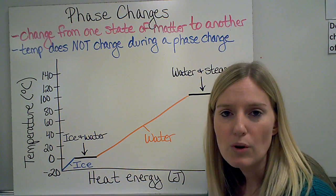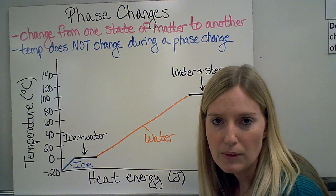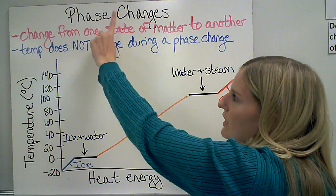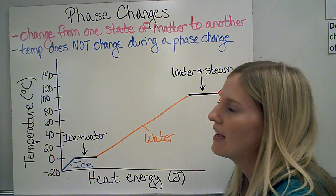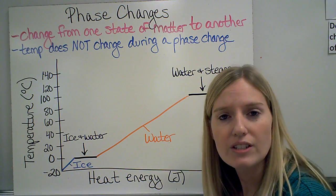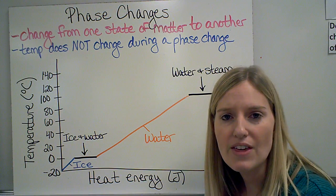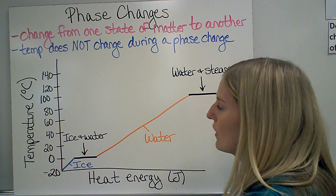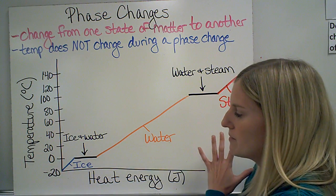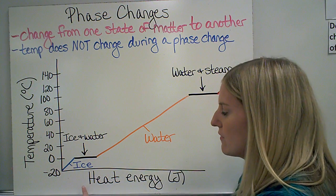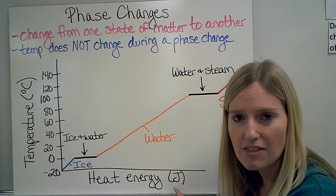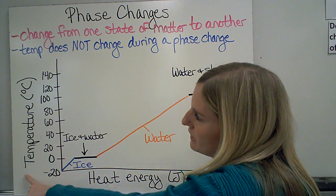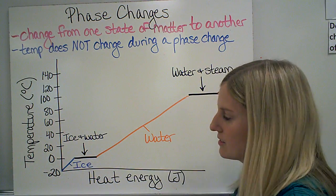When one state of matter becomes another state of matter, that's called a phase change. And during a phase change, the temperature of that substance does not change. So if I look at my diagram here, I have heat energy increasing on the bottom and I have temperature here on my y-axis.